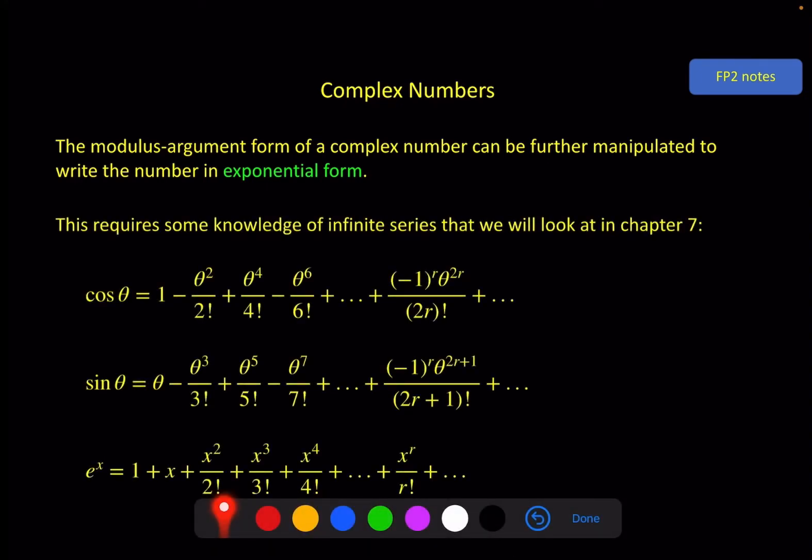You'll find where it comes from when you get to chapter 7. But we just need to say here that these infinite series expansions for e to the x is this, for sine theta is this, cosine theta is this.